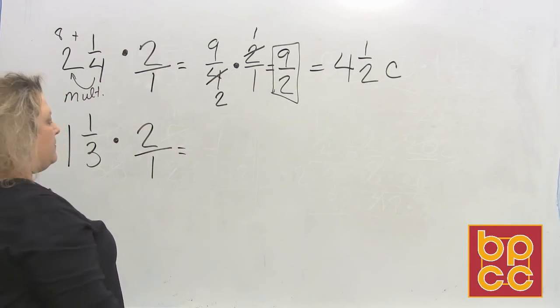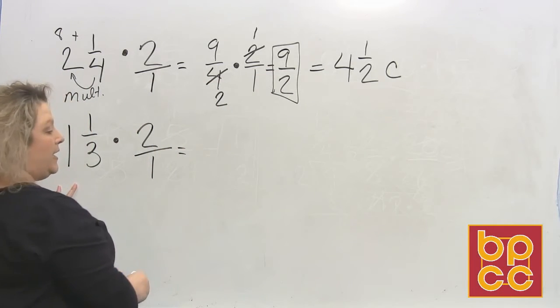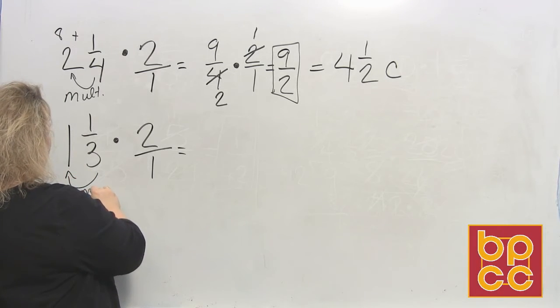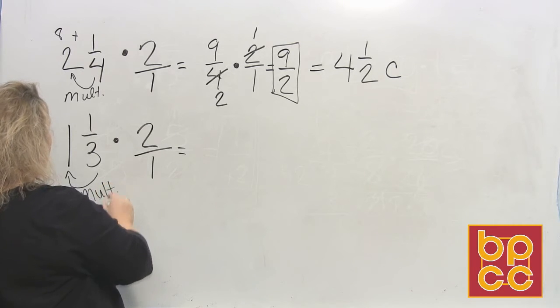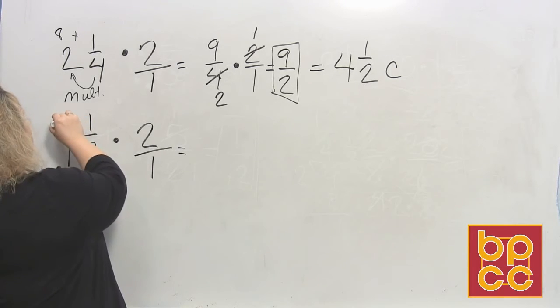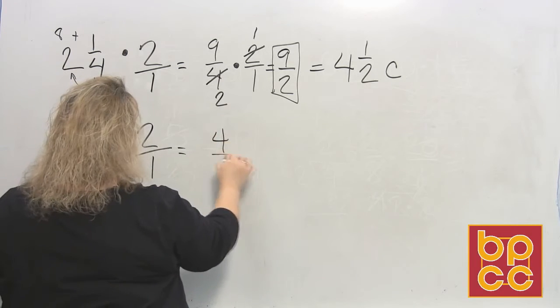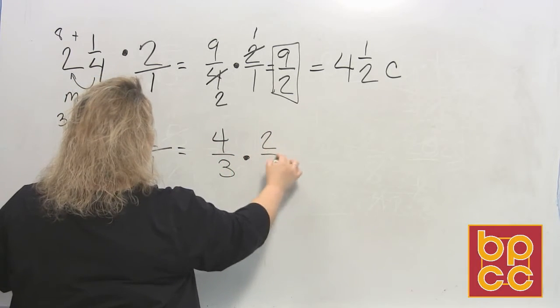I have 1 and 1/3 cups of peanut butter. So again, you want to change this mixed number to an improper fraction. So that would be 3 times, because we're going to multiply, 3 times 1 is 3, plus 1 makes 4. So that would be 4/3 times 2/1.